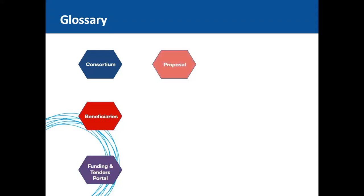Horizon 2020 project proposals are required to be presented in a specific outline, dictated by the Horizon 2020 proposal templates. There are different templates for research and innovation actions, innovation actions, CSAs, MSCAs, and ERCs. For more detail on templates, a previous webinar is available on the website.